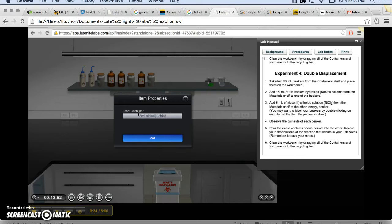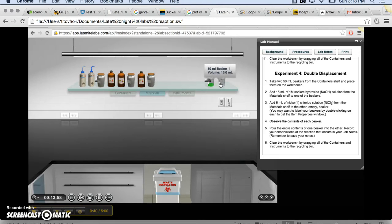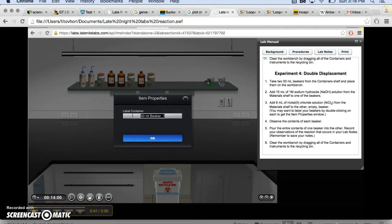It's really important in the lab that we label our beakers properly, because if we mismix our chemicals then we could end up creating a reaction we didn't intend. So as you can see here, we're properly labeling both of our beakers in order to stay safe in the lab.